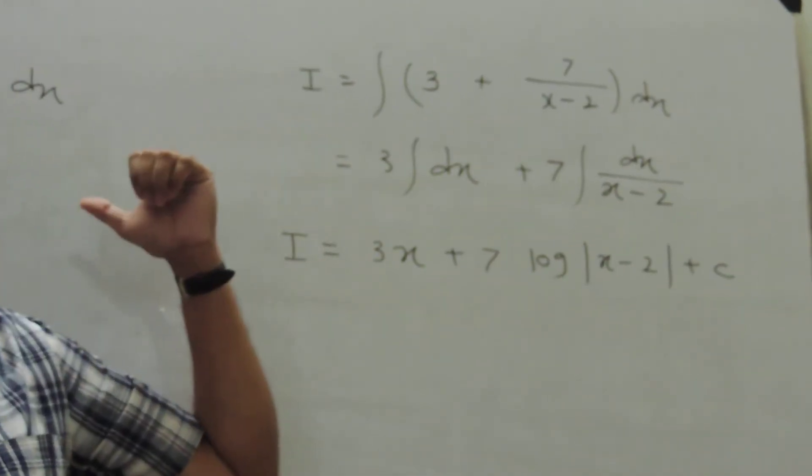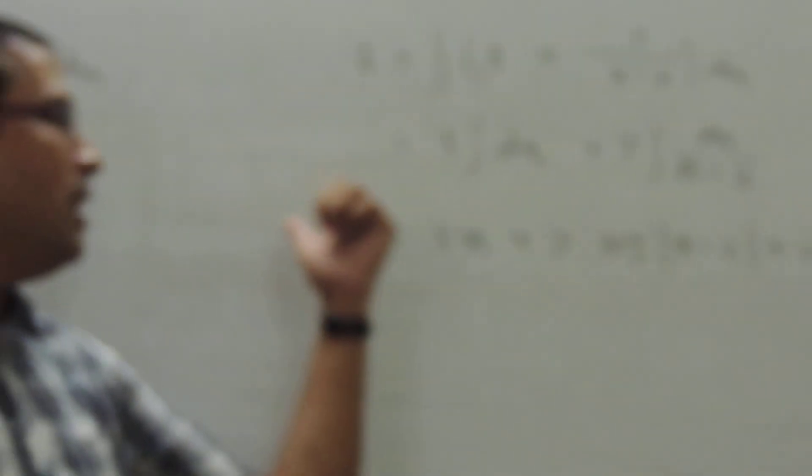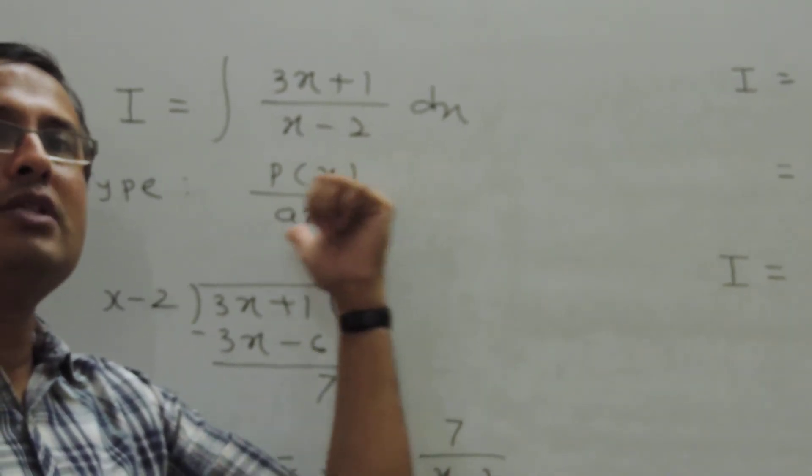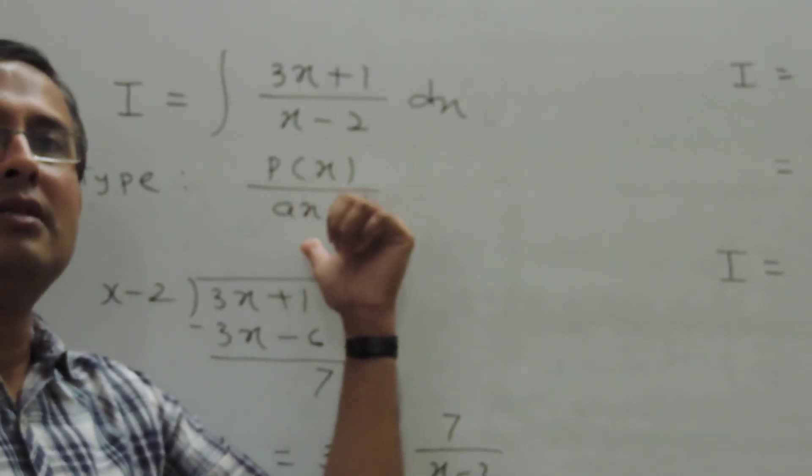So you have to remember this type. What is that type? I will explain again. Numerator is a polynomial in x. And what is denominator? Denominator is a linear function.